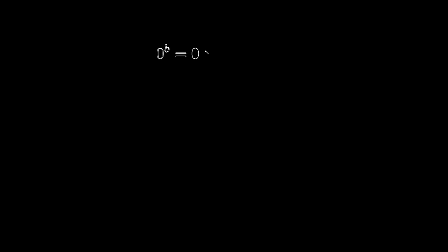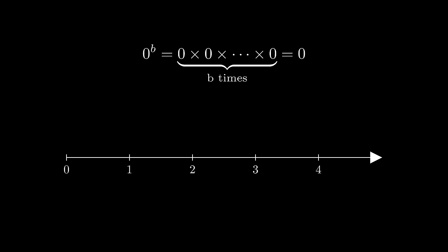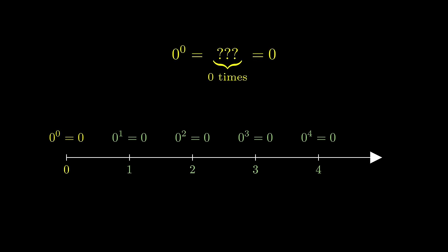But the counterargument is very strong. By definition, 0 to the power of b, as long as b is a positive integer, is going to be 0. Just like the argument we made earlier, it seems natural to extend this pattern such that 0 to the power of 0 is 0, although it is very tricky to think about one number multiply itself 0 times.